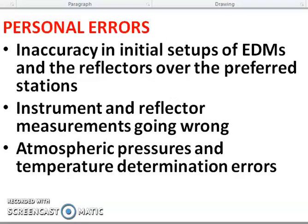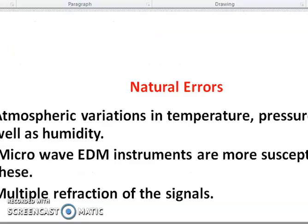There are errors in EDM. Personal error: set-up of EDM reflector over a preferred station is wrong; instrument and reflector measurement going wrong — this is also personal error. Atmospheric pressure and temperature determination error — this is also personal error. Natural error: atmospheric variation in temperature, pressure, and humidity. Microwave EDM instrument may not work correctly. Multiple reflections of the signal — this is a natural error.